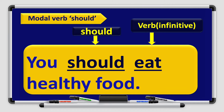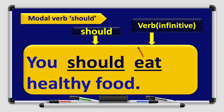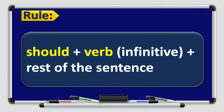Let's look at this example. The modal verb should: 'You should eat healthy food.' We have the subject 'you,' we have the modal verb 'should.' After the modal verb should, we use the verb in the infinitive form — that means without any addition, without -ed, without -ing, without -s. The rule is: should + verb in the infinitive form + rest of the sentence.